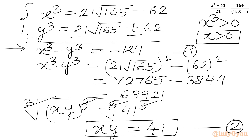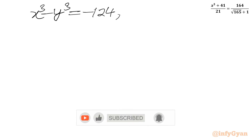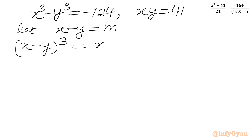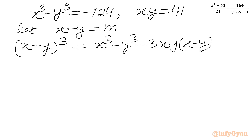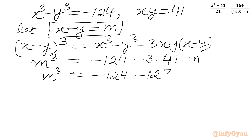So we have two equations: x³ − y³ = −124 and xy = 41. Let us substitute x − y = m. Using the algebraic identity (x − y)³ = x³ − y³ − 3xy(x − y), the LHS becomes m³ = −124 − 3 × 41 × m, so m³ = −124 − 123m.